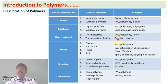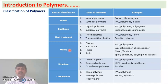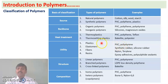Examples of thermosetting plastics are Bakelite and polyester. Another classification is based on utility. Based on usage, we can classify polymers into four types: plastics, elastomers, fibers, and resins. Plastics — examples are polyvinyl chloride and polystyrene — are somewhat rigid.